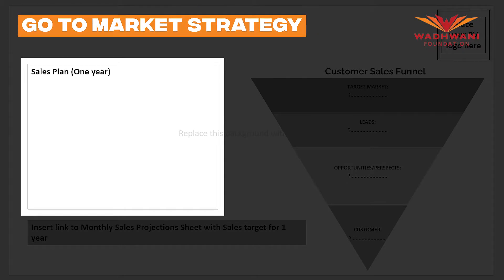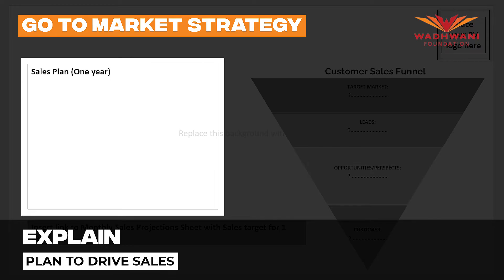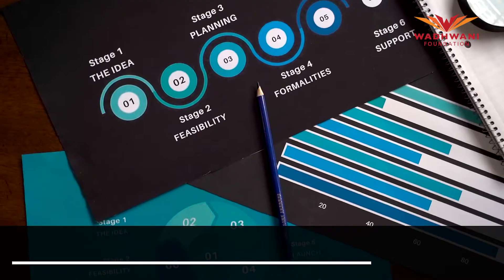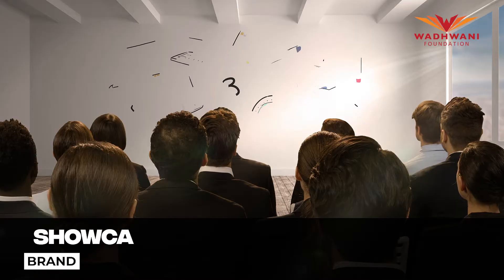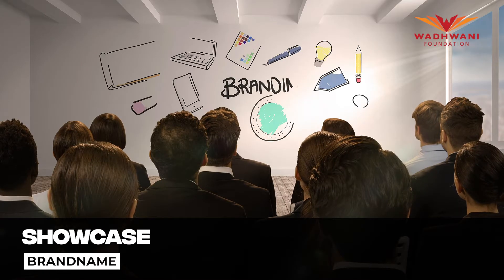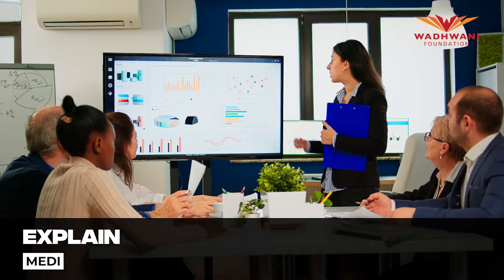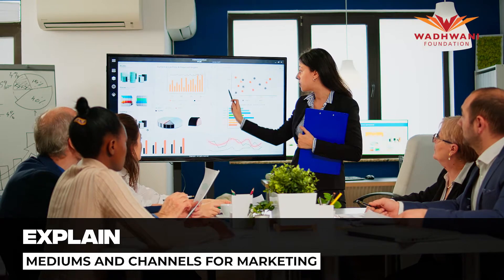Use the empty box in the slide to explain your one-year strategy and how you plan to drive sales. The marketing and sales slide is the most interesting part of this presentation and outlines the strategy for your venture. Showcase your brand name and logo, state your positioning statement, and explain what mediums and channels you are planning to use for marketing your venture and why.